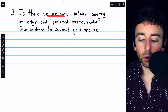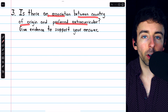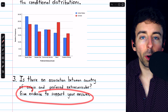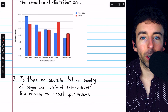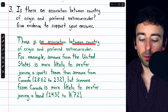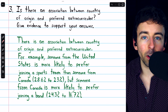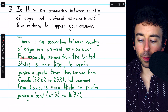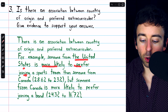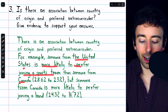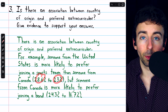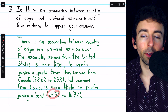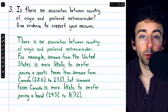Finally, number three: is there an association between country of origin and preferred extracurricular? There is certainly an association between country of origin and preferred extracurricular. As evidence, someone from the United States is more likely to prefer joining a sports team than someone from Canada — it's 28.6% to 23%. But someone from Canada is more likely to prefer joining a band — 24.3% for Canada compared to 16.7% for the United States.